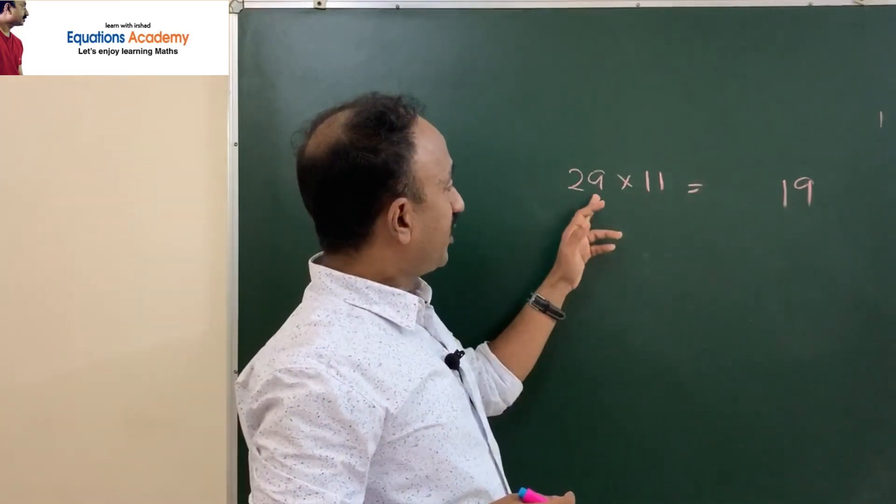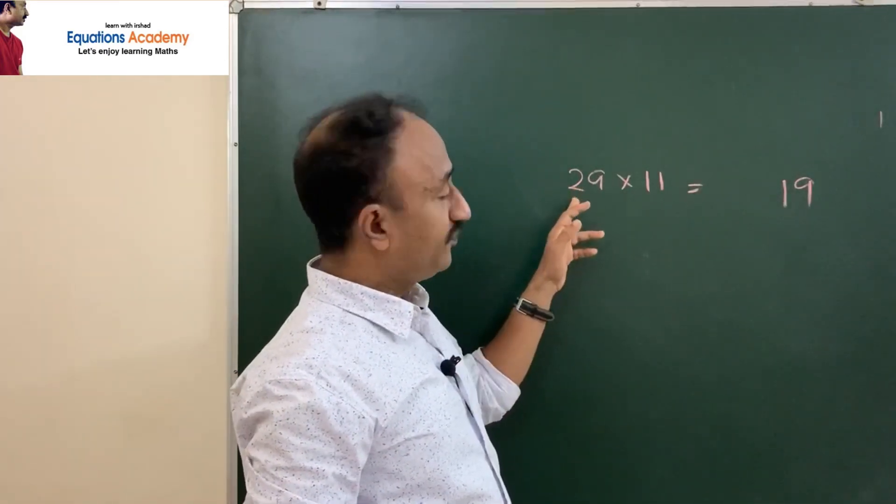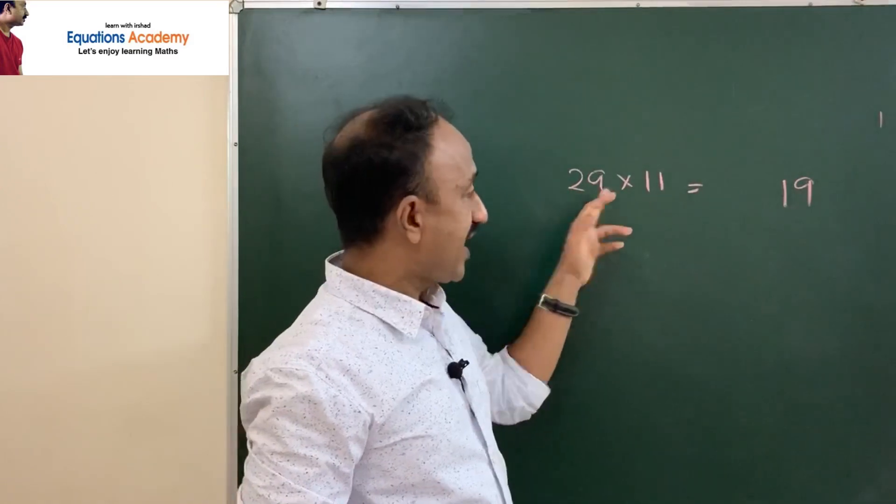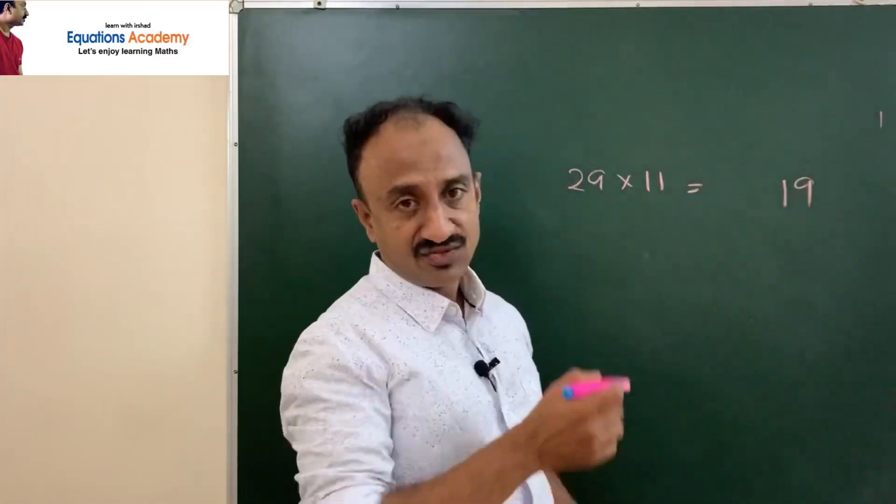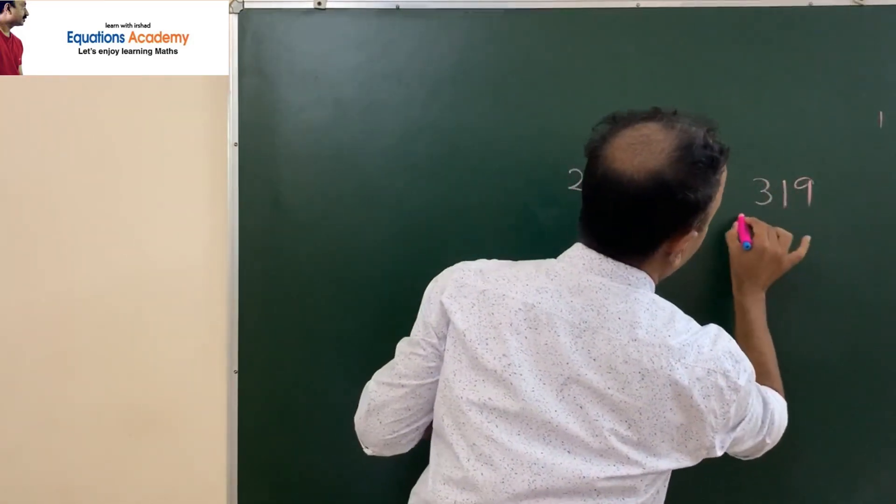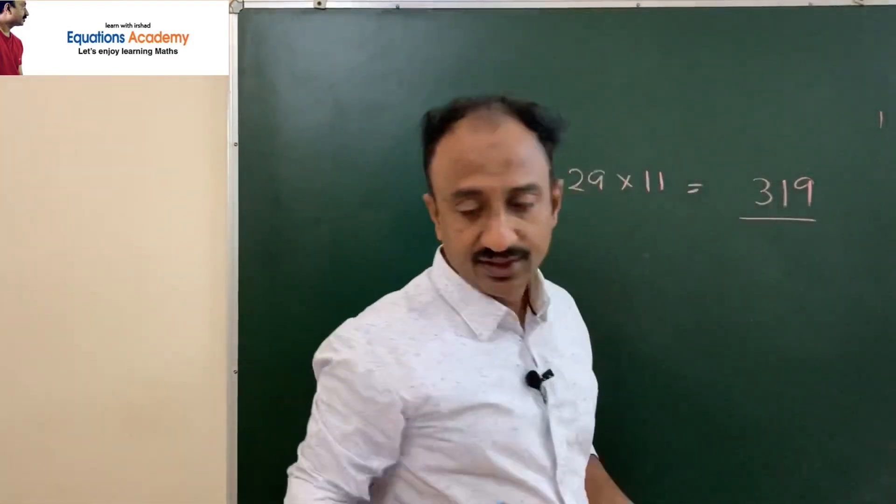Then, what is the next step actually? We will keep this 2 as it is. So with this 2, we will add that 1. 2 plus 1 is 3. So our answer is 319.